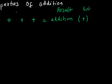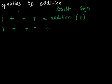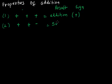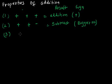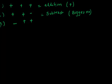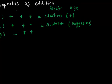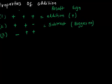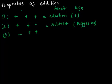Similarly, if we have one positive and one negative number, then we subtract and the sign will be of the bigger number. We need to follow these rules so that we don't make any mistake when calculating positive and negative terms.